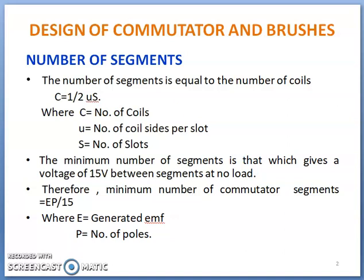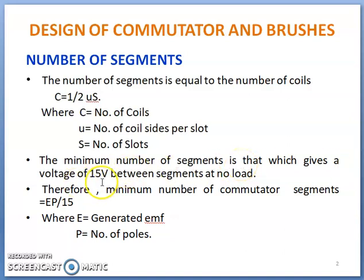Under the design of commutator, the number of commutator segments is decided as follows: the number of commutator segments is equal to the number of coils, given mathematically as C = half · U · S, where C is number of coils, U is number of coil sides per slot, and S is number of slots. The minimum number of segments is that which gives a voltage of 15 volts between segments at no load.